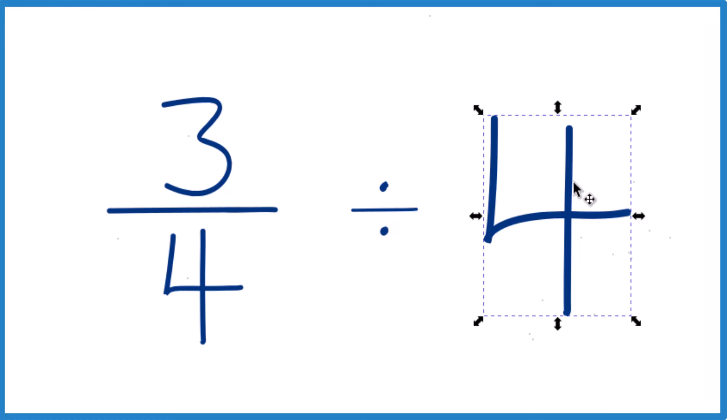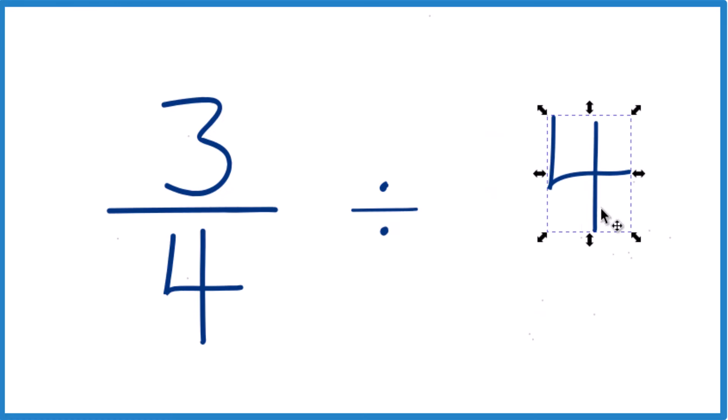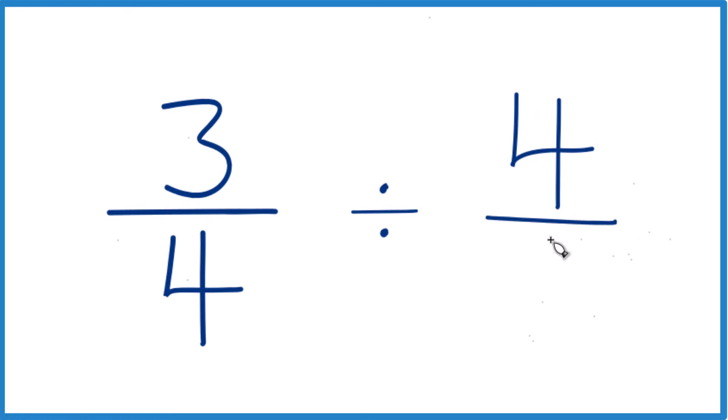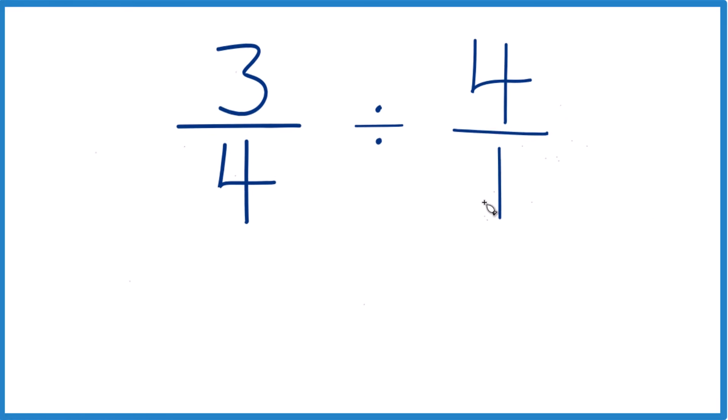Instead of 4 though, let's take it and call it 4 over 1, because 4 over 1 is still 4, it's 4 divided by 1.